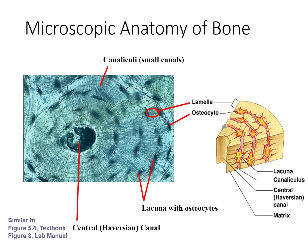Now let's relate the images in your book and lab manual to an actual microscope slide. This entire structure here is an osteon or Haversian system. Notice the central canal in the center — that would be synonymous with this. Notice the concentric circles, or lamellae. And then we have these little dark areas which are actual cavities; they appear dark because light doesn't penetrate them. In those lacunae we have the osteocytes. And lastly we have radiating out from the central canal in between the lacunae, those small canaliculae.